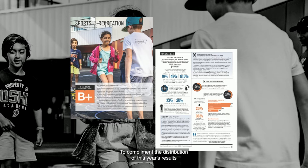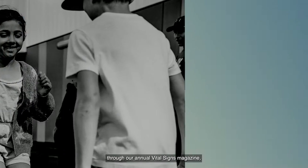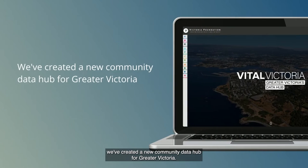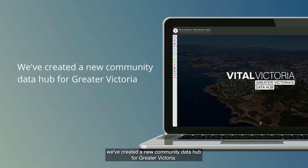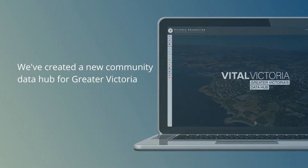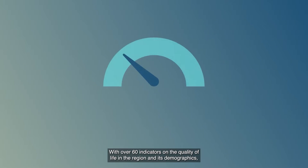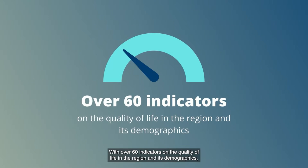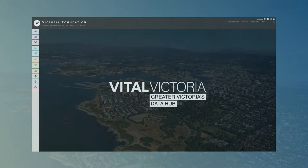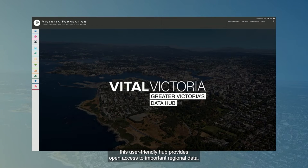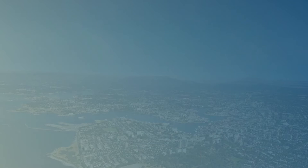To complement the distribution of this year's results through our annual Vital Signs magazine, we've created a new community data hub for Greater Victoria. With over 60 indicators on the quality of life in the region and its demographics, this user-friendly hub provides open access to important regional data.